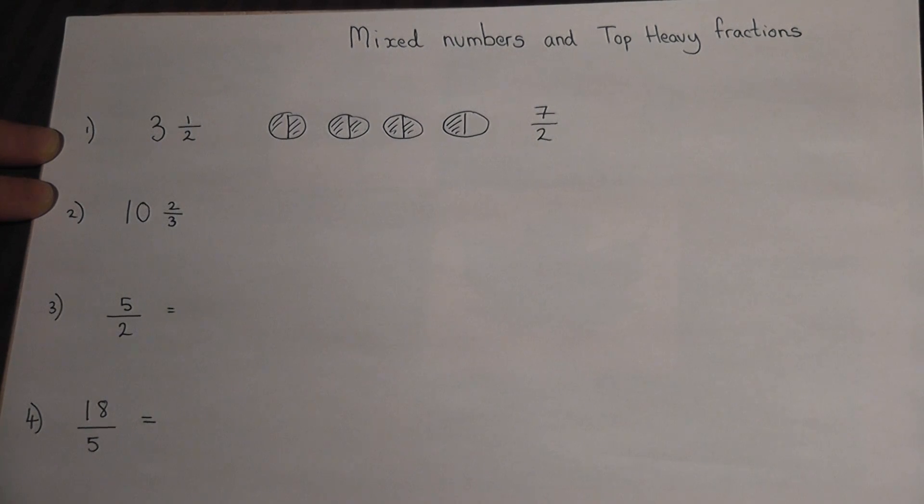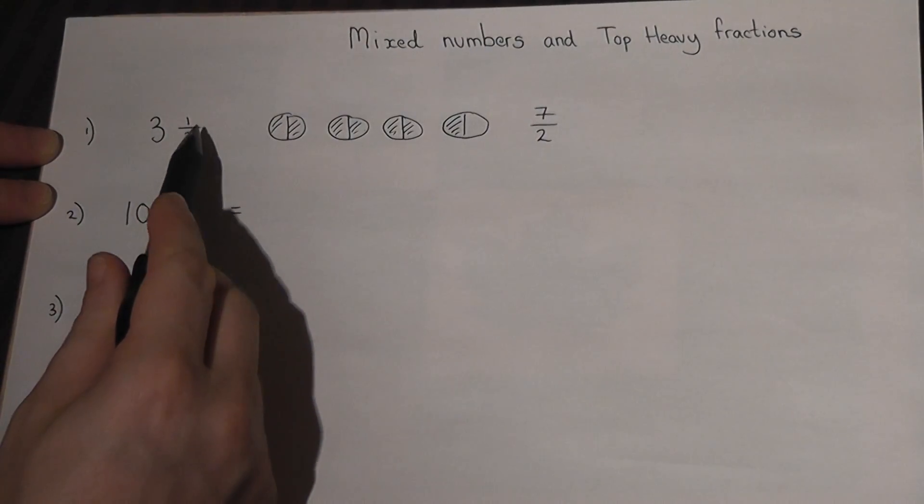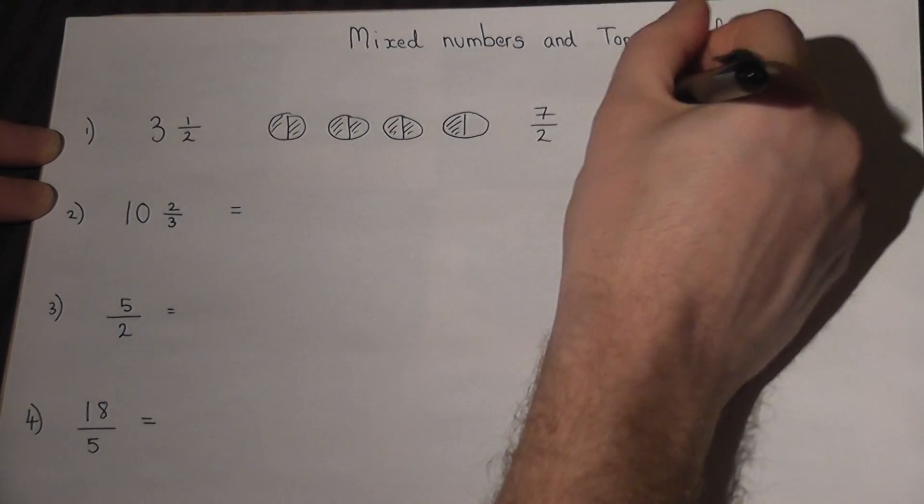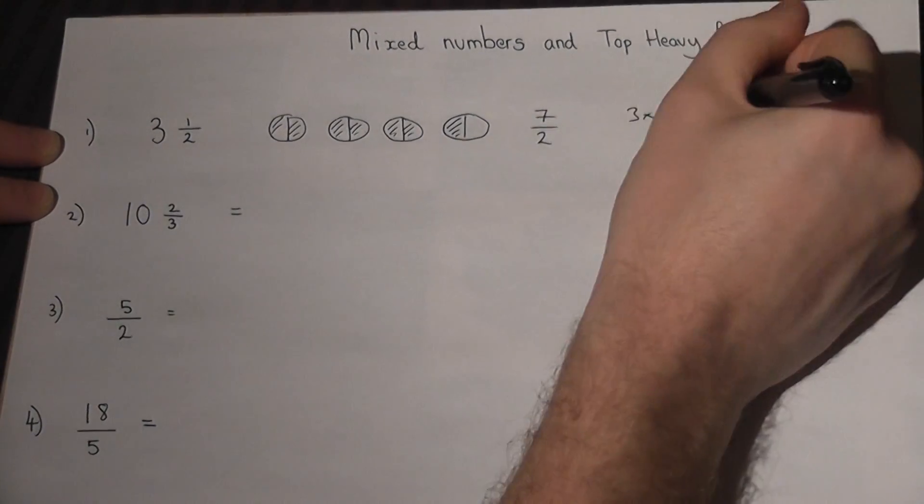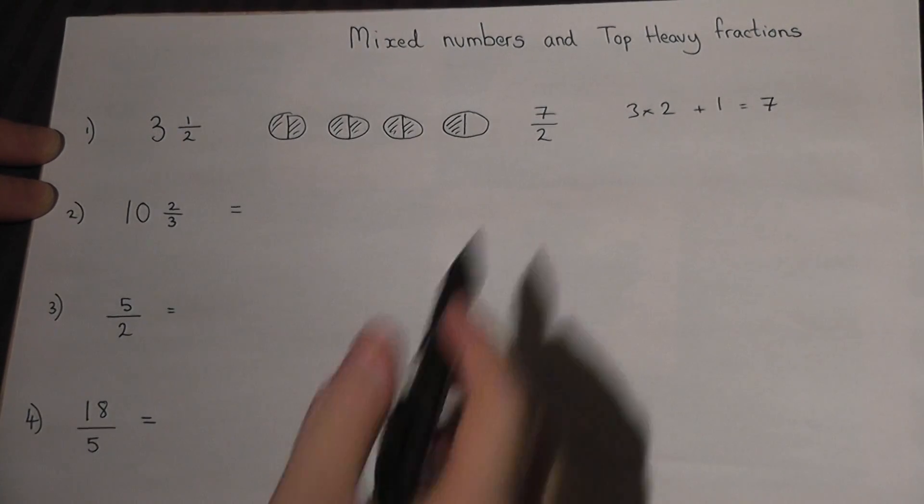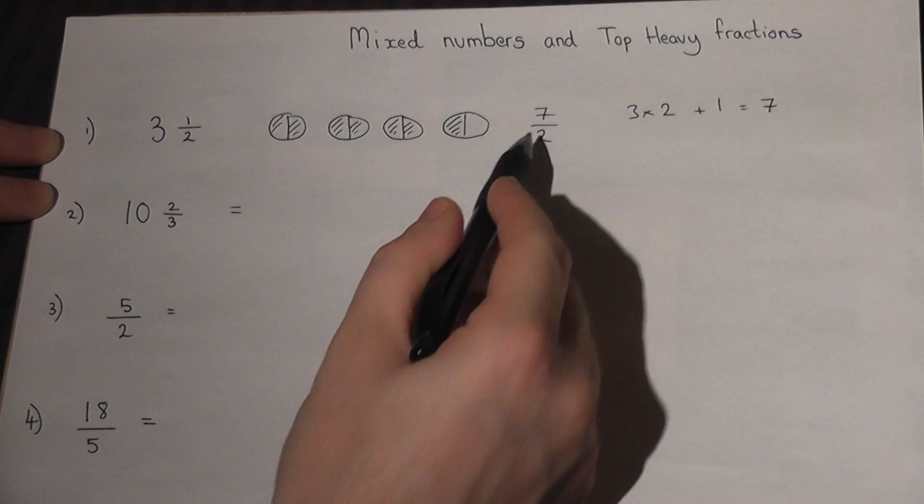Now sometimes you're asked to convert a mixed number into a top heavy fraction, and there's a quick way of doing it. Observe in the first one that three times two is six, plus one is seven - that's where the numerator comes from. The denominator is kept the same.